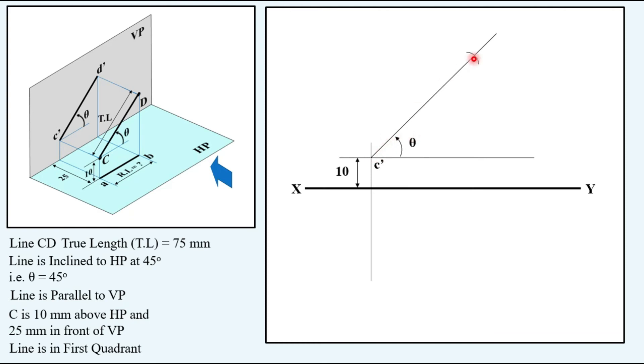Taking 75 in the compass, keeping compass at C dash and cutting this arc, naming it as D dash and making it dark, thick and visible.